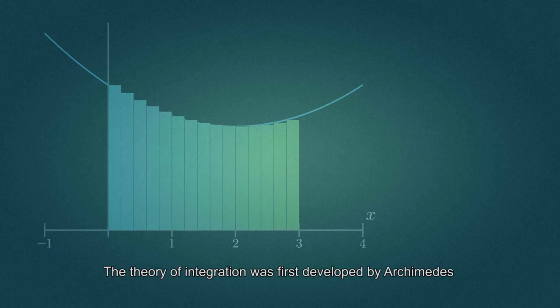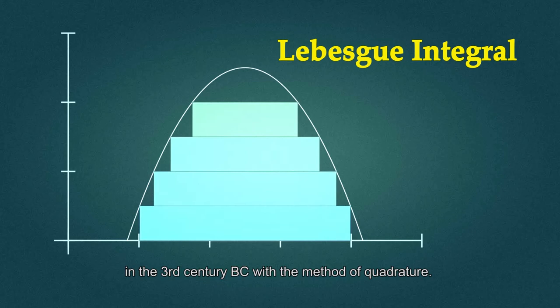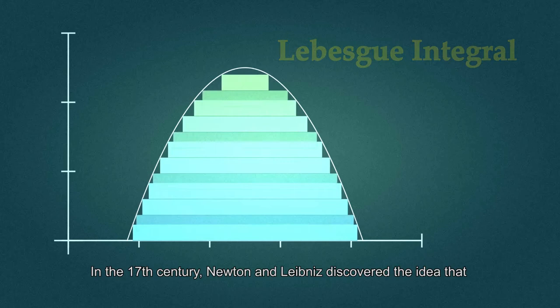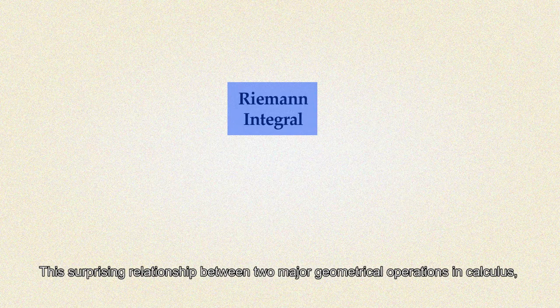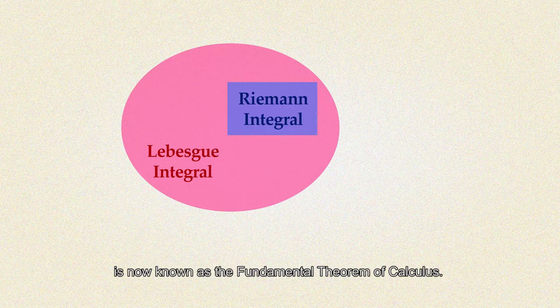The theory of integration was first developed by Archimedes in the 3rd century BC with the method of quadrature. In the 17th century, Newton and Leibniz discovered the idea that integration was intrinsically linked to differentiation. This surprising relationship between two major geometrical operations in calculus, differentiation and integration, is now known as the fundamental theorem of calculus.